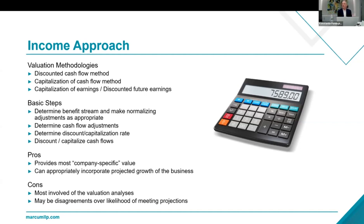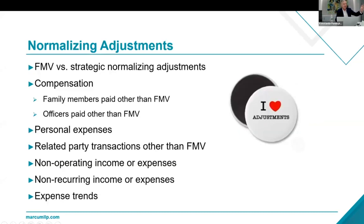Think of Al Dunlap — the chainsaw guy. He used to buy companies and cut out all the fat. What you've got to do is use the before-and-after method. The income approach provides the most company-specific value because it's indicative of the business. They always say past performance is not indicative of future results, but when you buy a company, you better hope the past performance is indicative of future results. It can also approximate the projected growth of the business depending on competition, strategic areas, and supply chain.